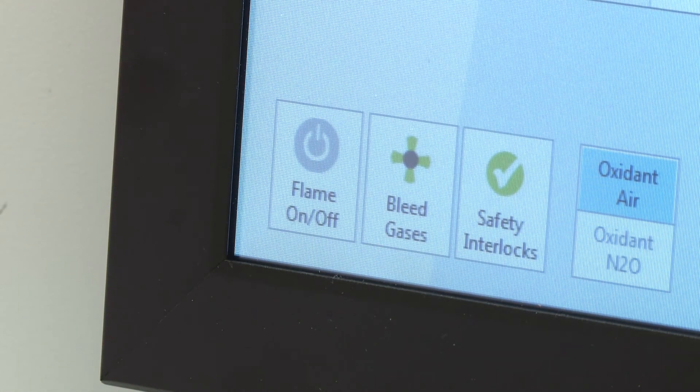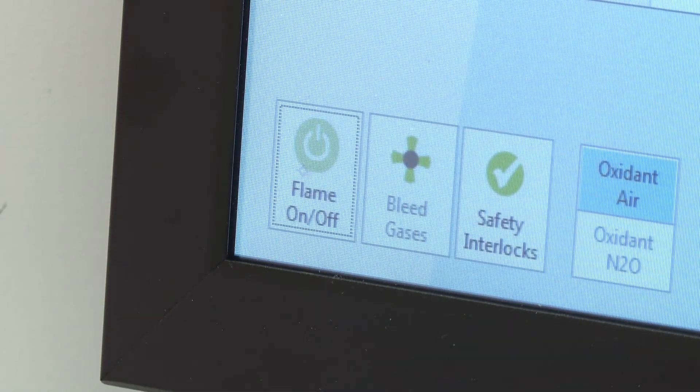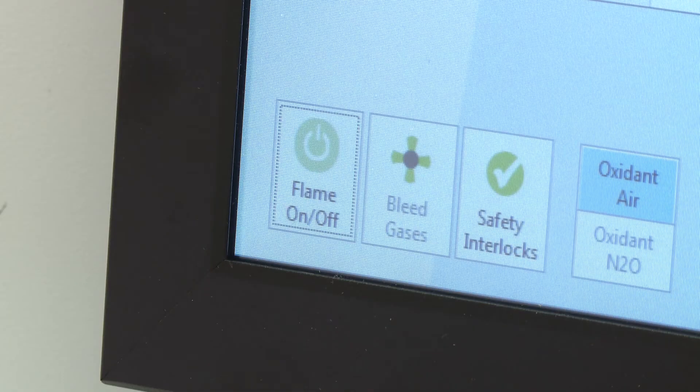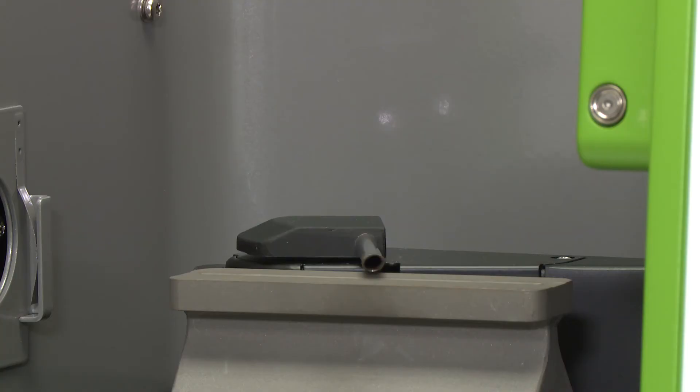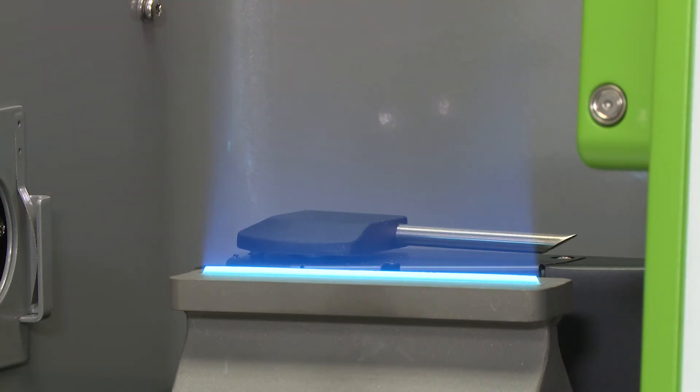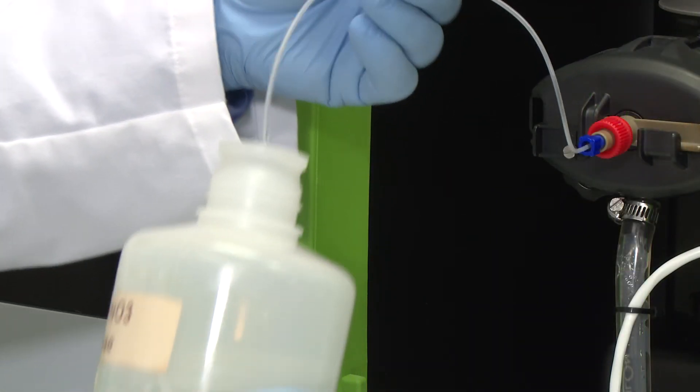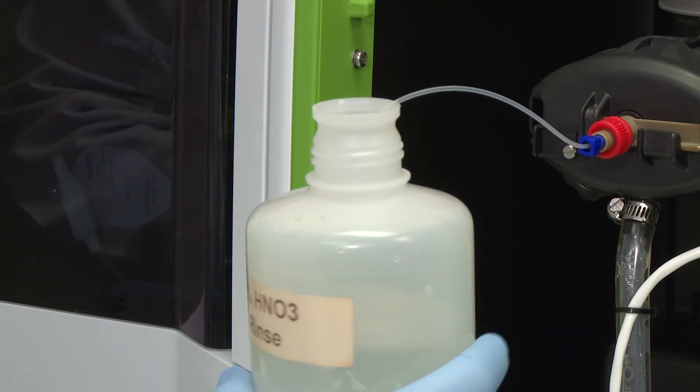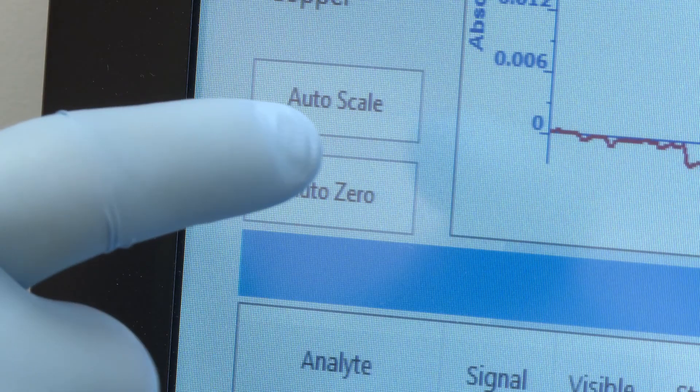Once your vertical position has been found, go to the continuous graphics and turn on your flame. Aspirate the blank solution. When the signal is steady, click on the Auto-zero graph button.